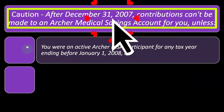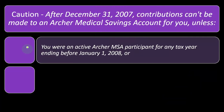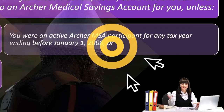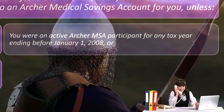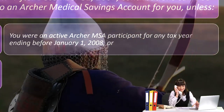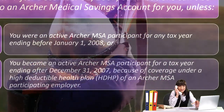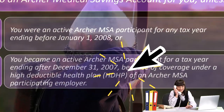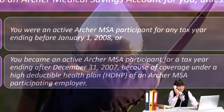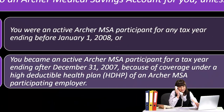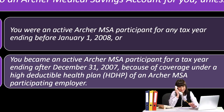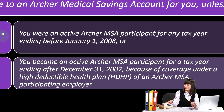Caution: after December 31, 2007, contributions can't be made to an Archer medical savings account for you unless you were an active Archer MSA participant for any tax year ending before January 1, 2008, or you became an active Archer MSA participant for a tax year ending after December 31, 2007 because of coverage under a high deductible health plan (HDHP) of an Archer MSA participating employer.